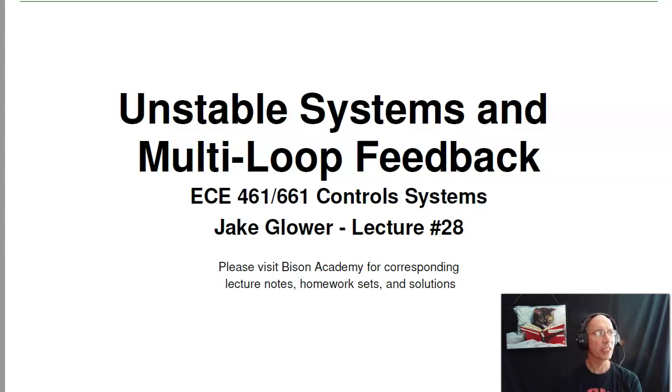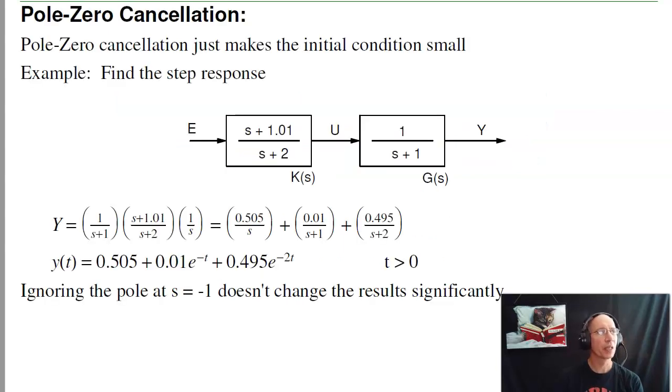Welcome to lecture number 28 for ECE461, Unstable Systems and Multi-Loop Feedback. The problem we're looking at in this lecture is what happens if you have an unstable plant. Previously we've looked at how to stabilize plants that have stable poles, now we're looking at an unstable pole.